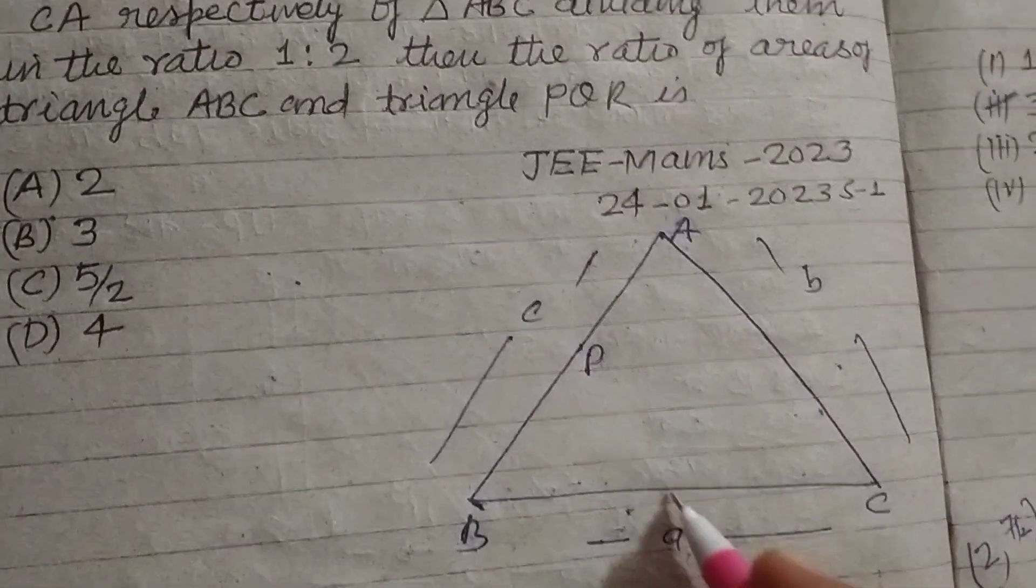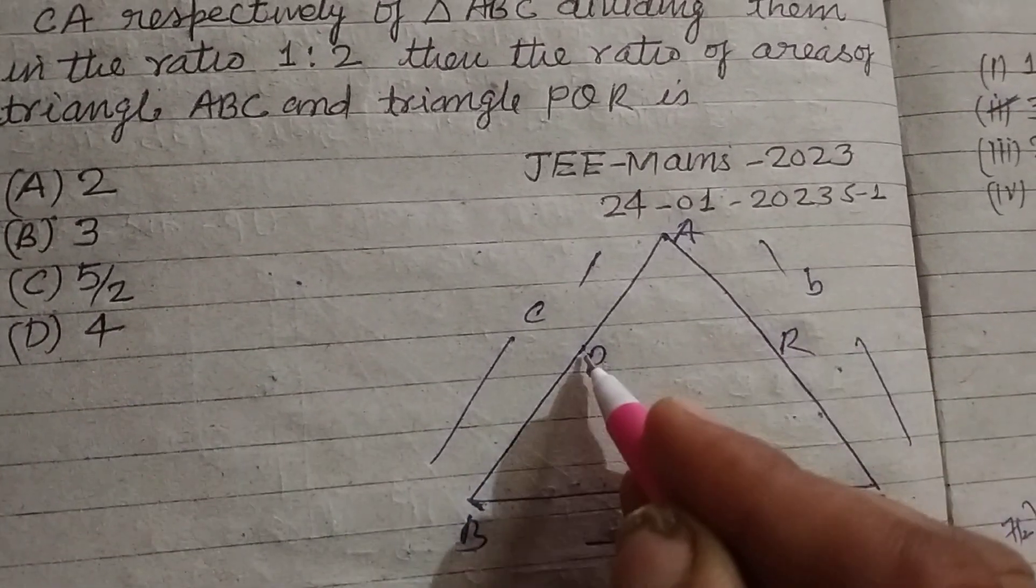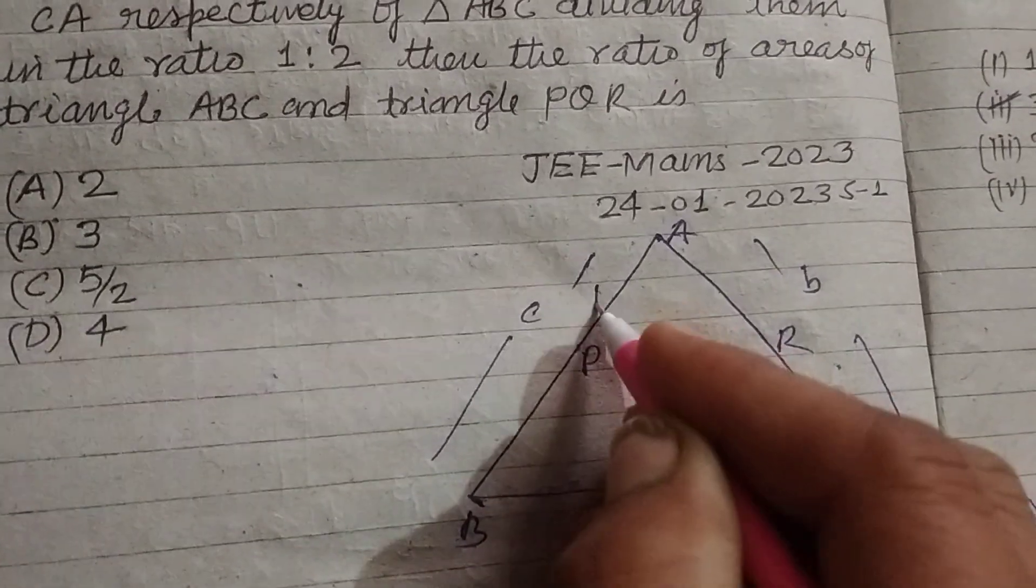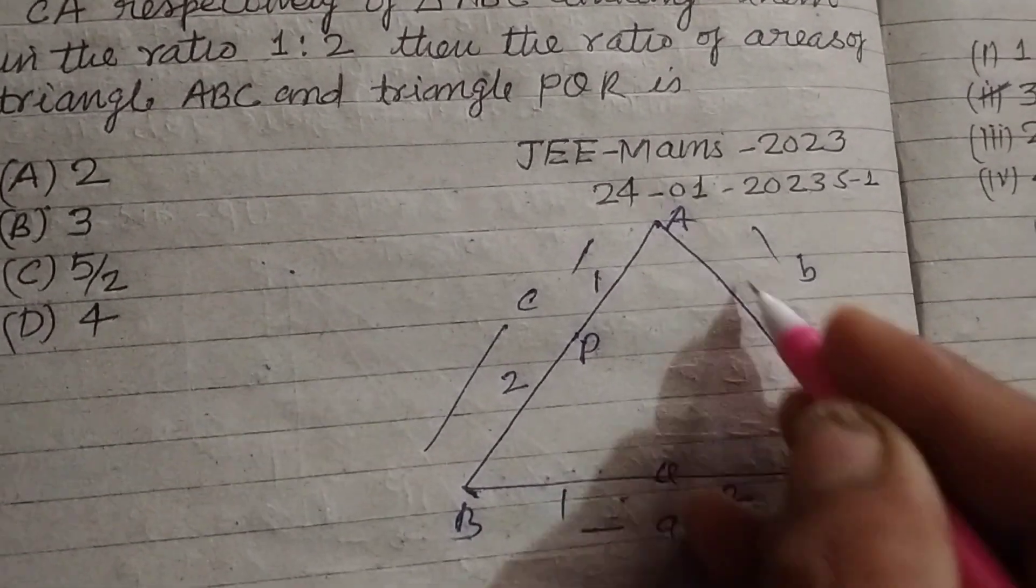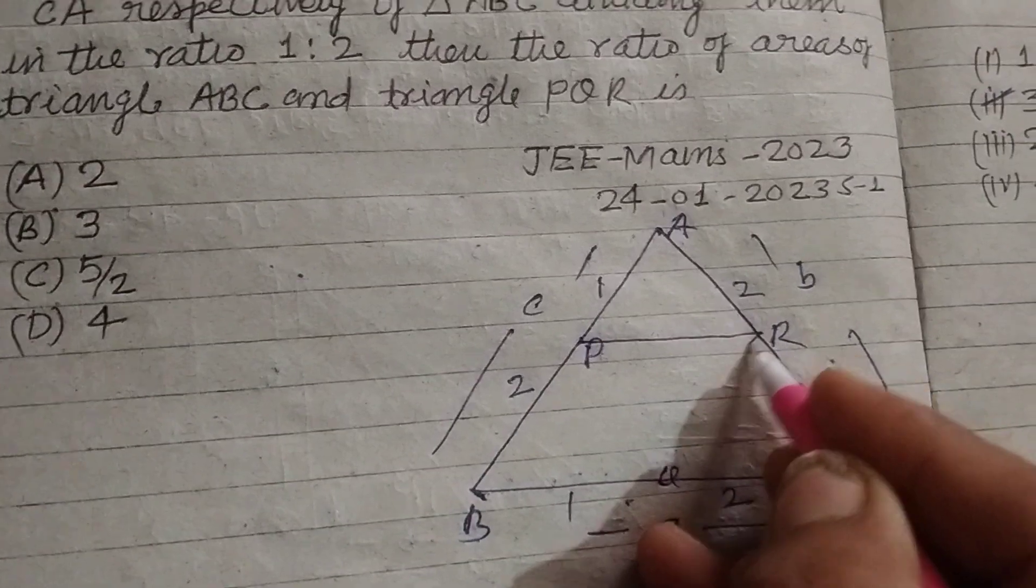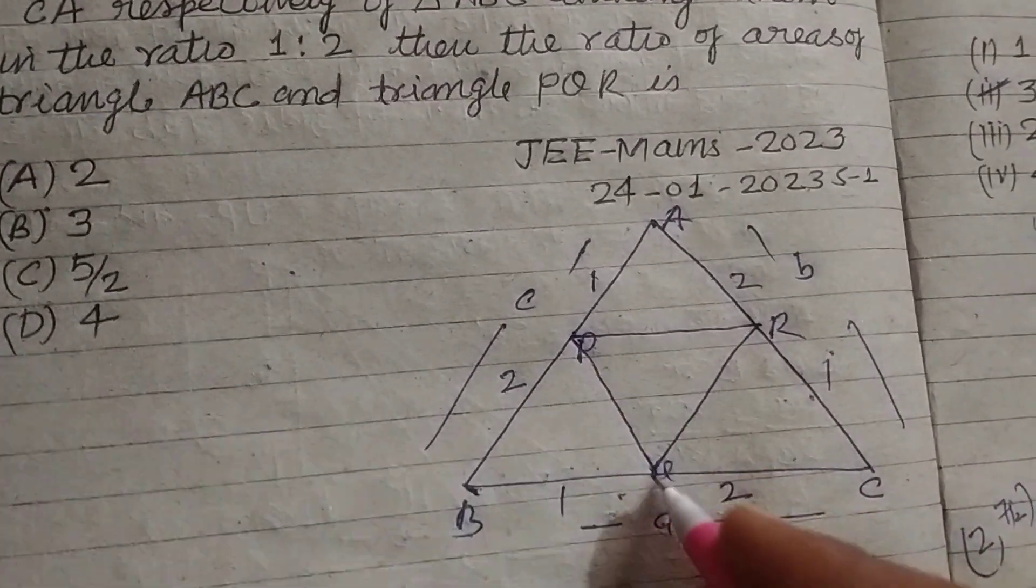Now, points P, Q, R divide the sides in ratio 1:2. When we add these points, we get triangle PQR.